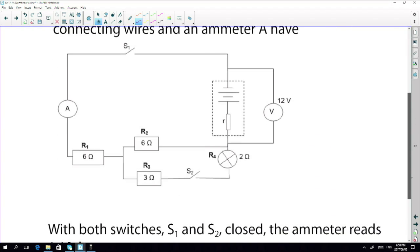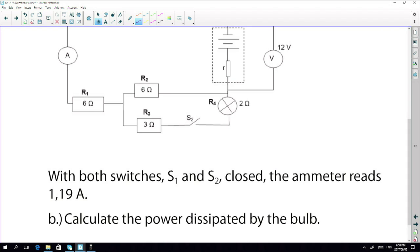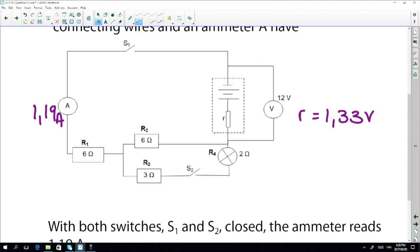This question for the next part relies on you remembering that internal resistance is constant. Doesn't change. Very important. Now, I love the next question. Now they say to you, so there's my diagram. If both switches, S1 and S2 are closed, the ammeter now reads 1.19 amps. Internal resistance, 1.33 volts. EMF, still 12.